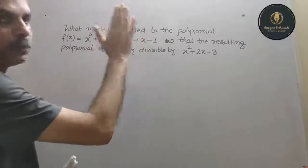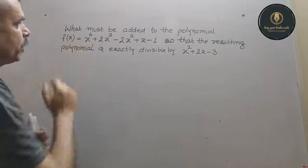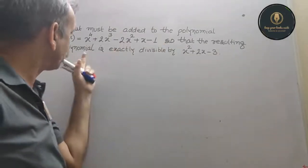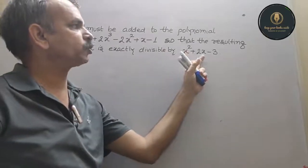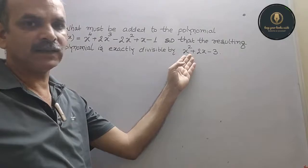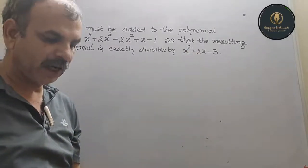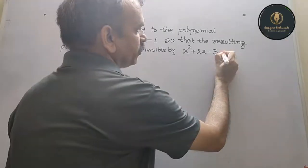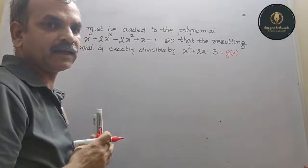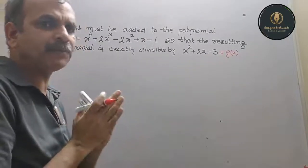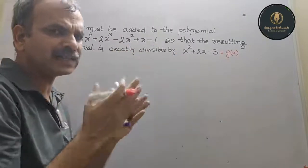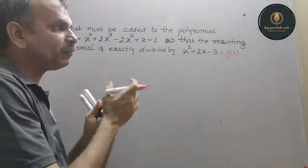What must be added to the polynomial f(x) = x⁴ + 2x³ - 2x² + x - 1 so that the resulting polynomial is exactly divisible by g(x) = x² + 2x - 3? If we divide f(x) by g(x), we will get some remainder, and we need to add something so it is fully divided.